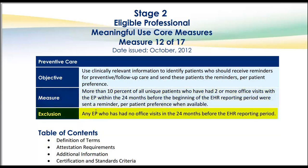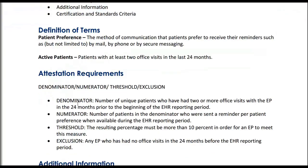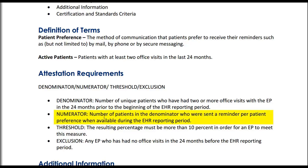The exclusion is any eligible professional who has no office visits in the 24 months before the EHR reporting period. In the attestation requirements, the denominator is the number of unique patients who have had two or more office visits with the eligible professional in the 24 months prior to the beginning of the EHR reporting period. The numerator is the number of patients in the denominator who were sent a reminder per patient preference when available during the EHR reporting period.